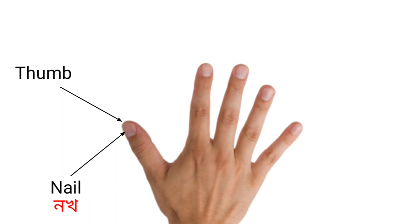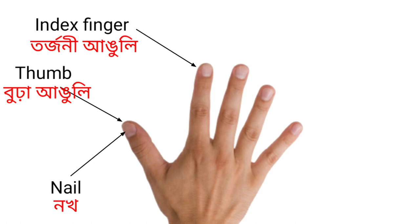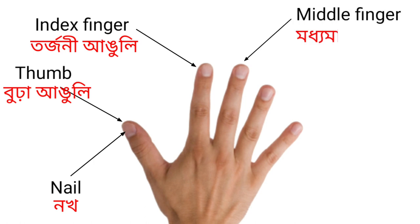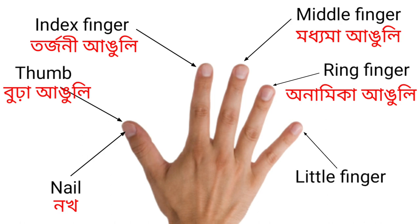Thumb — that means Burha Anguli. Index Finger — that means Torjani Anguli. Middle Finger — that means Moidhama Anguli. Ring Finger — that means Onamika Anguli. Little Finger — that means Konishtho Anguli.